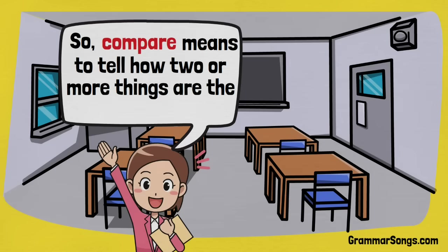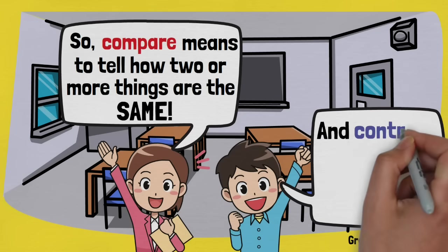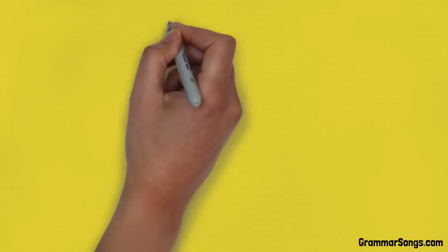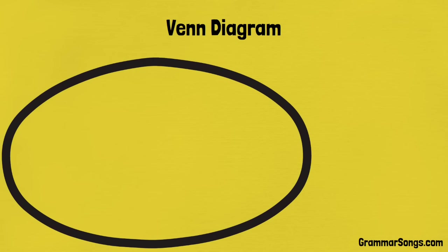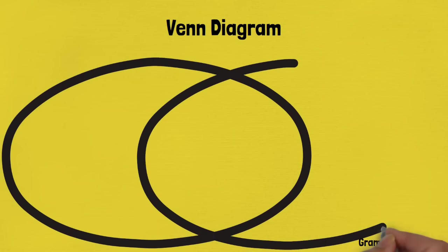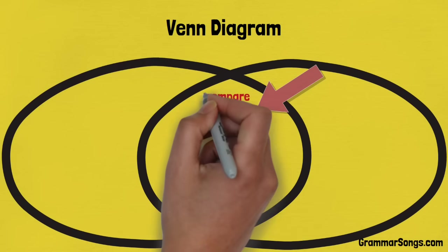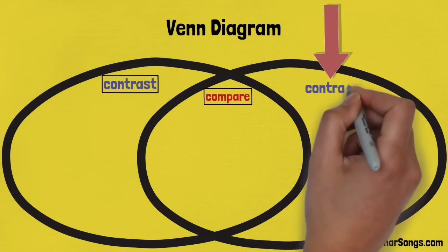So compare means to tell how two or more things are the same, and contrast means to tell how they are different. Organizing your thoughts and ideas can help you when you compare and contrast. A Venn diagram is a handy tool people often use to organize their ideas when comparing and contrasting two things. The middle area is used to compare or tell how the two things are similar or alike. The outer areas are used to contrast or to tell how the two things are different.